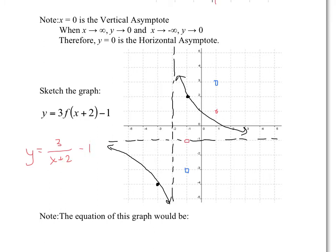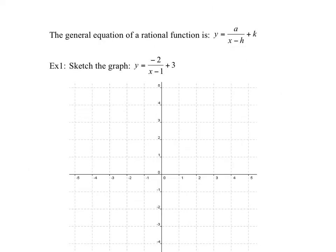So the general equation of a rational function is y equals a/(x−h) + k. Here, a is your stretch, h is your horizontal shift, and k is your vertical shift.